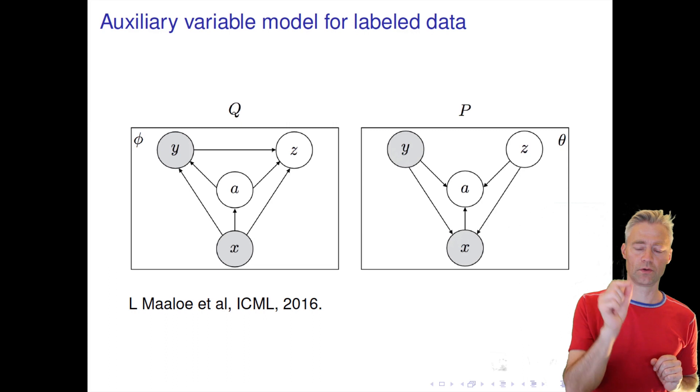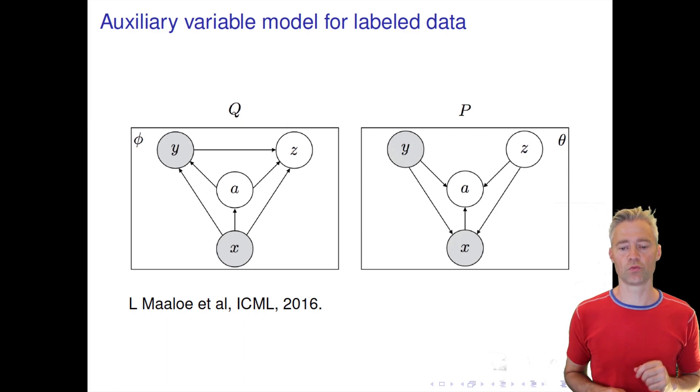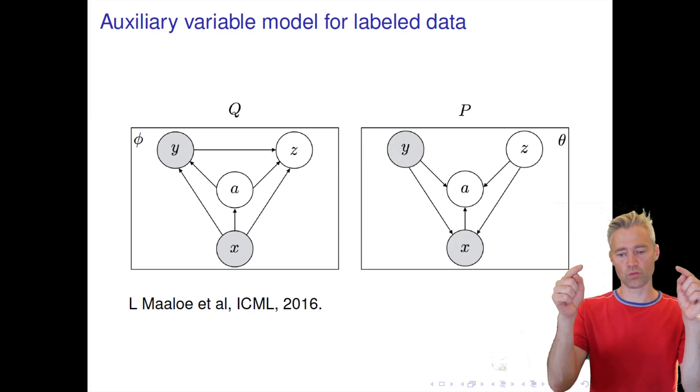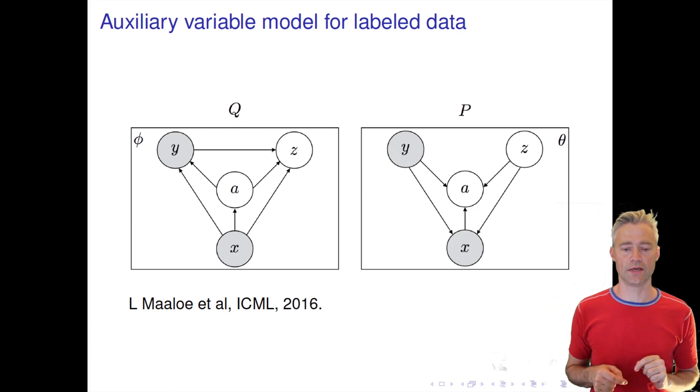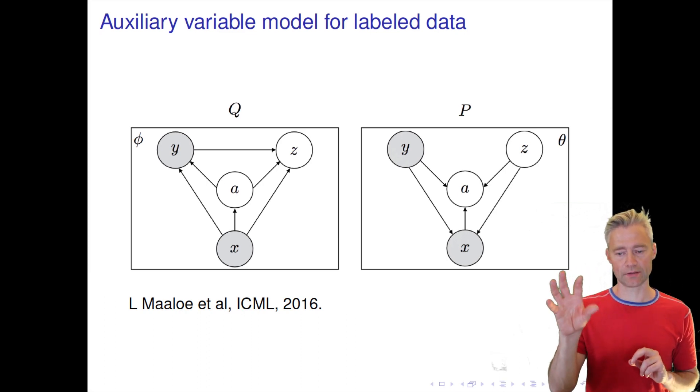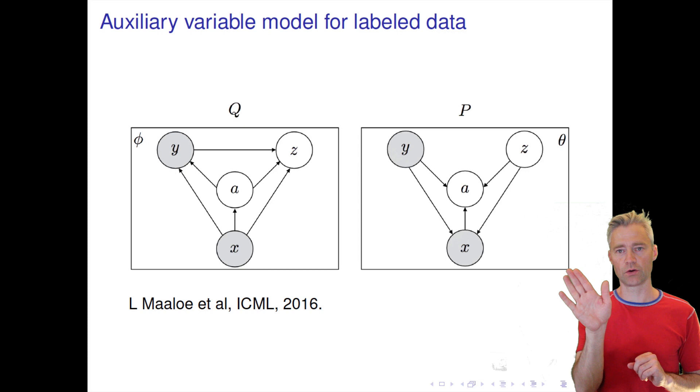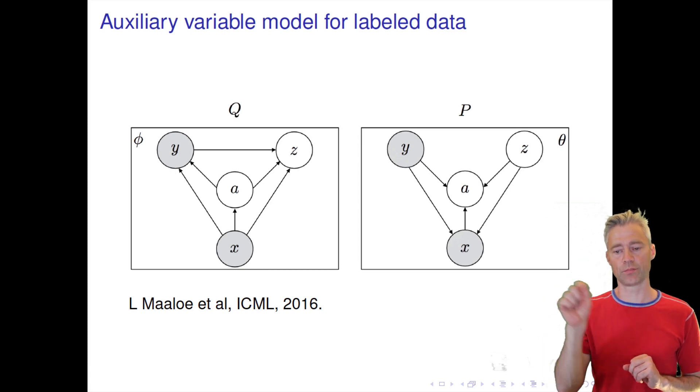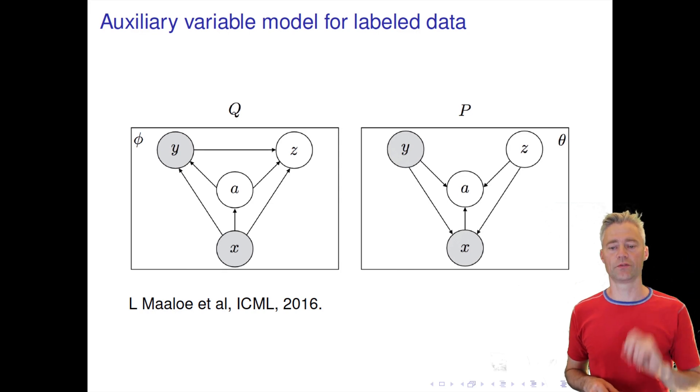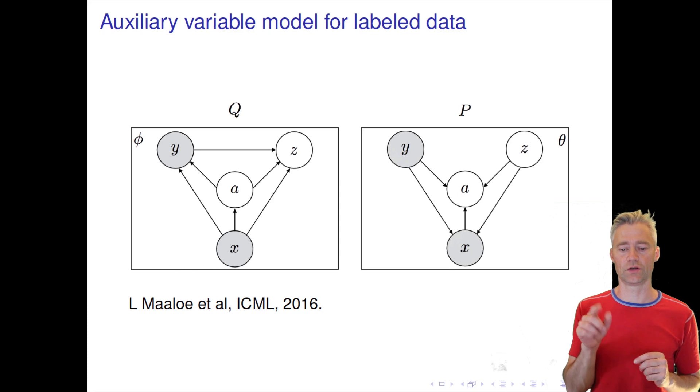That could be our latent variable for the style of the image. And we decide on what type of image - it could be a one. Then we turn on the Y label variable as one, and then these two bits of information go together to generate the X. So that's our generative model. We separate the style - that could be the angle of the digit and the thickness of the pen, all collected in C. And then the label information is collected in Y, and these two go together to generate the image.